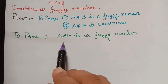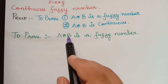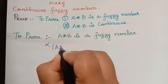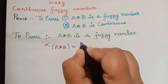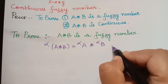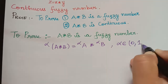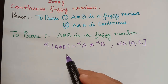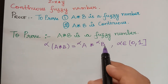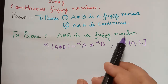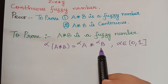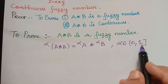First let us prove that A★B is a fuzzy number. To prove this, it is enough if we prove that the alpha-cut of A★B equals the alpha-cut of A starred with the alpha-cut of B, for alpha an element of (0, 1]. We have already learned about this in the previous section on arithmetic operations on fuzzy numbers.